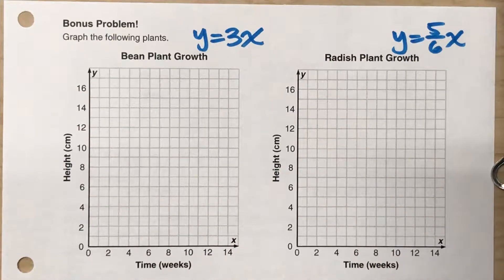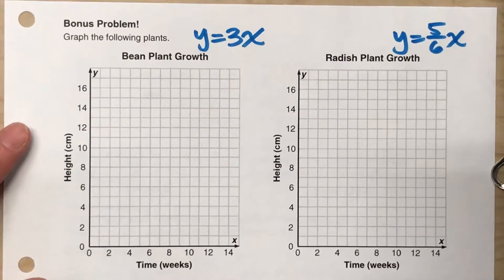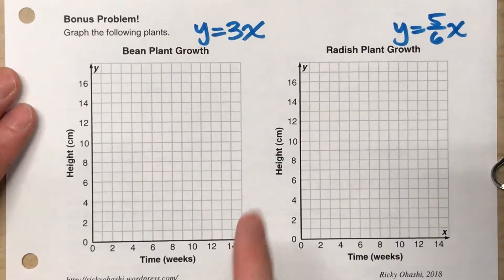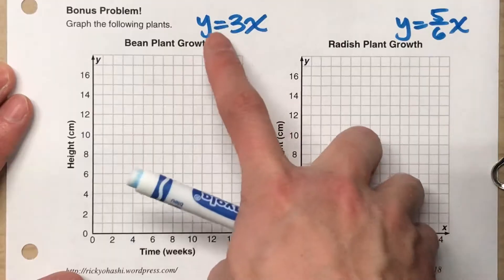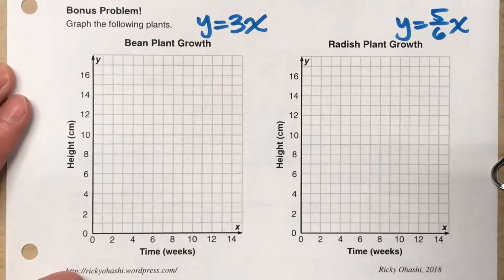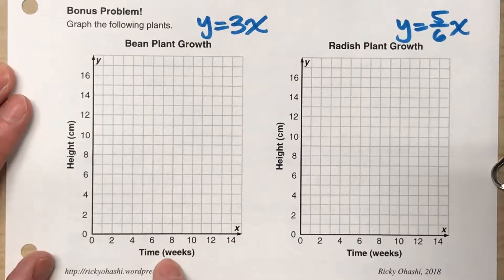So today, we learned how to graph proportional relationships from an equation. In this example, I have a bean plant, and we wrote the equation y equals 3x to represent its height and weeks.